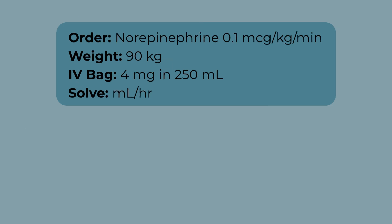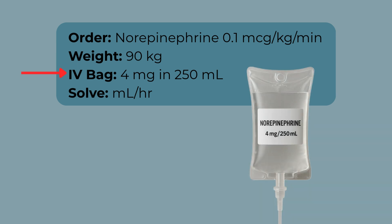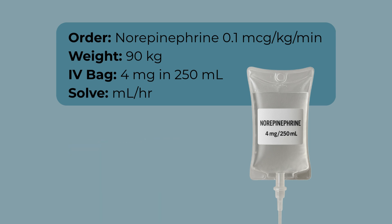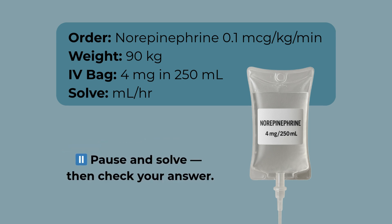Let's keep building. The provider orders norepinephrine at 0.1 micrograms per kilogram per minute. Your patient weighs 90 kilograms and the IV bag reads 4 milligrams in 250 milliliters. Set up your problem using dimensional analysis, converting micrograms to milligrams and working your way to milliliters per hour. Pause and solve it, then come back for the full breakdown.